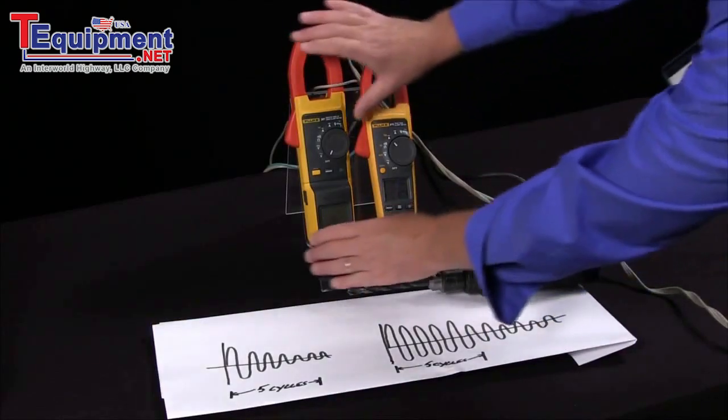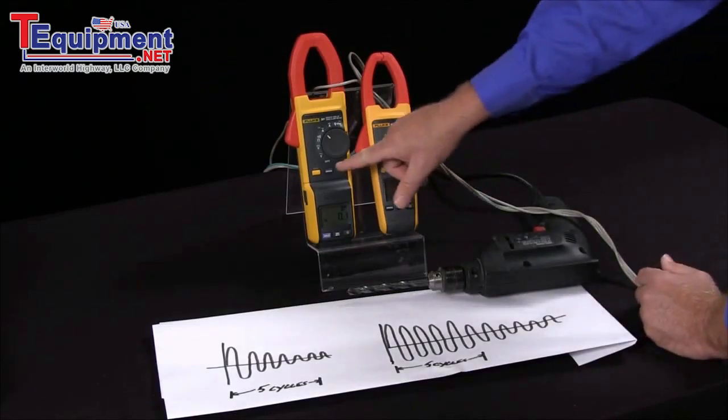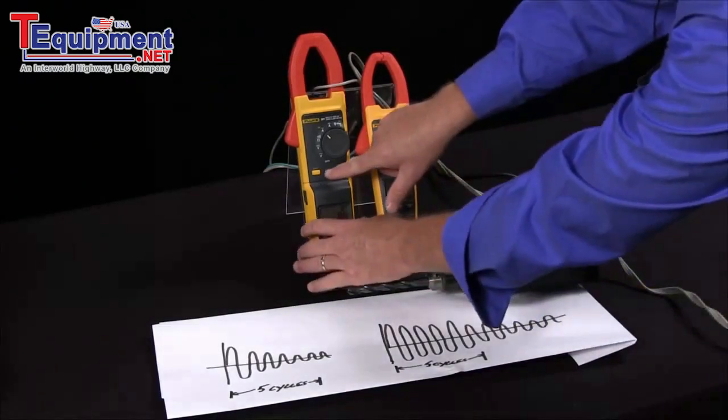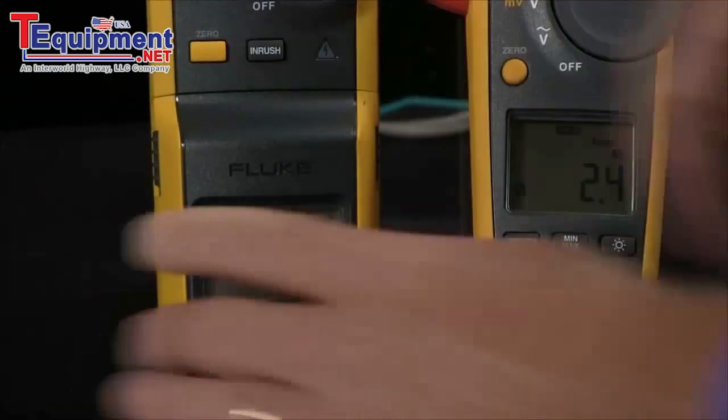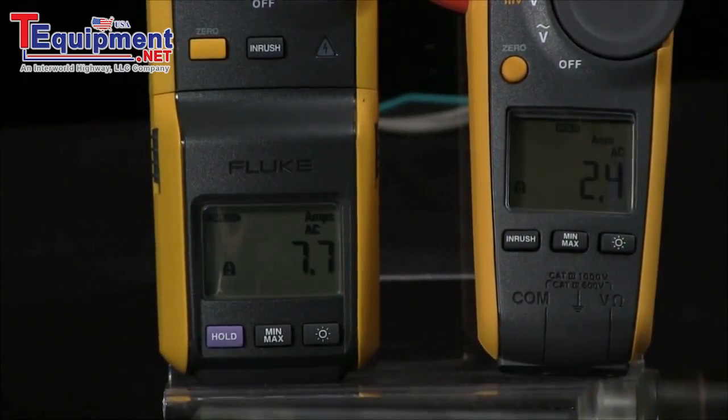Well, to take an inrush current I would turn on my meter to amps and I would need a clamp meter that has the ability to measure inrush. I hit the inrush button and then when my motor starts I can get the inrush current.